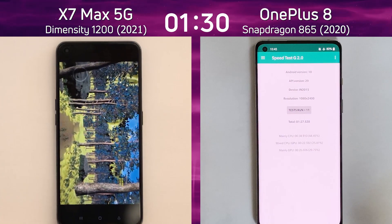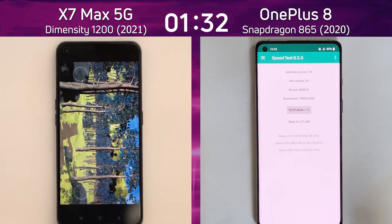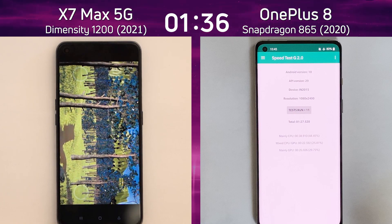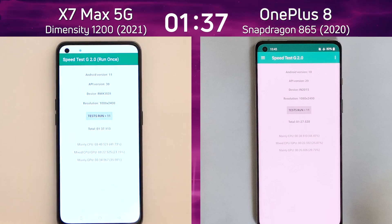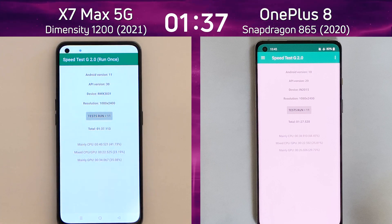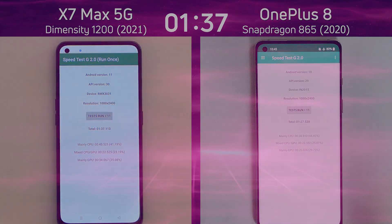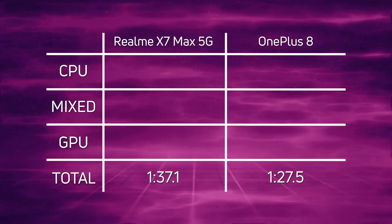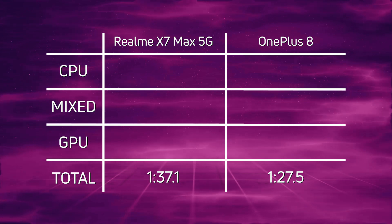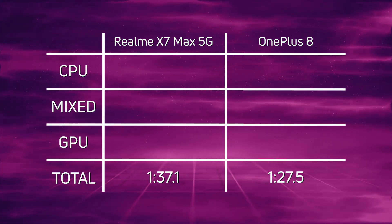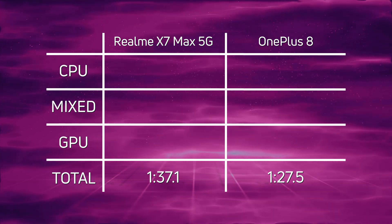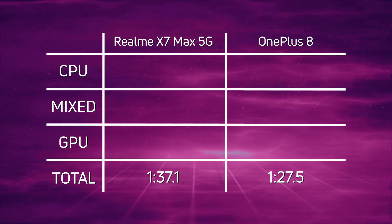One minute 27.5 as the Realme X7 Max 5G is moving its way through the forest. Any moment now as it gets to the end of the path — 137.1. So the OnePlus 8 with the Snapdragon 865 came in first at 1 minute 27.5, and then 9.6 seconds later came in the Realme X7 Max 5G with the Dimensity 1200 at 1 minute 37.1.